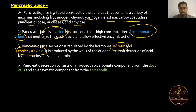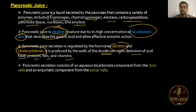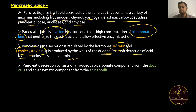Secretin and cholecystokinin regulate the secretion of pancreatic juice. They are produced by the wall of the duodenum upon detection of acid, food, proteins, fats, and vitamins. Pancreatic secretion consists of an aqueous bicarbonate component from the duct cells and an enzymatic component from the acinar cells.